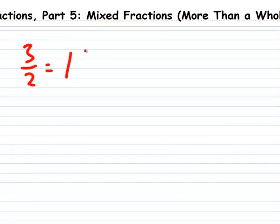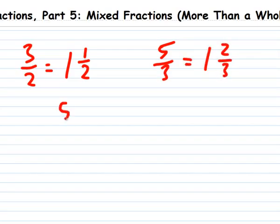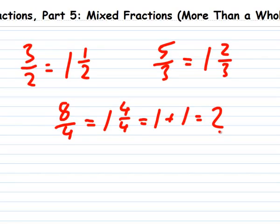So, 3 halves is 1 and a half, 5 thirds is 1 and 2 thirds, and 8 fourths equals 1 and 4 fourths, which is really 1 and another 1, which is 2.